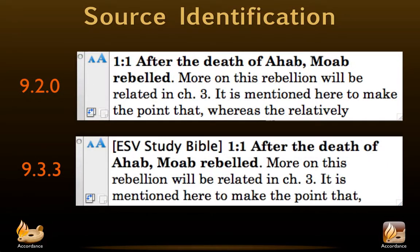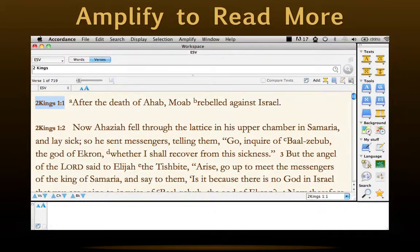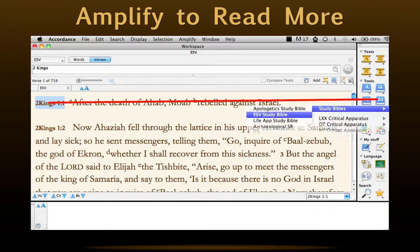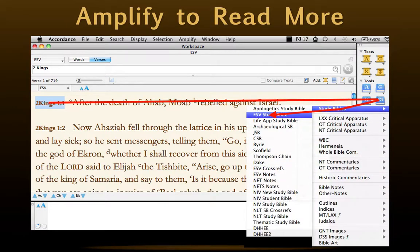All this digging can make it difficult to figure out which source is being accessed. That's why Accordance 9.3.3 has added the name of the source to the Instant Details window. You can see the difference in these two illustrations. Now, if we want to read more of a particular article, we can expand the Instant Details box or, more conveniently, amplify the reference directly to that tool on the resource palette.